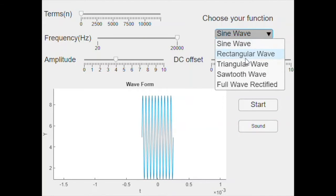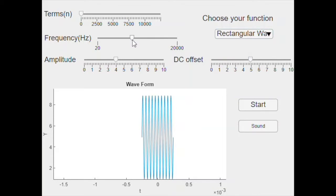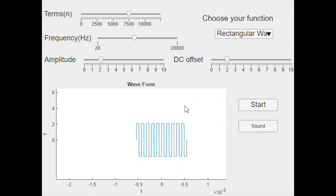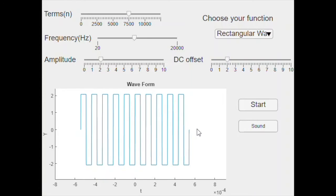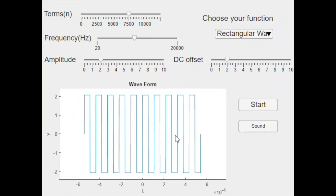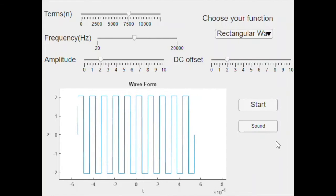And let's try rectangular wave. Set frequency to 10,000, amplitude to 2. And let's see the terms about 7,500. DC offset to 2. Okay, here is our wave. Very perfect.